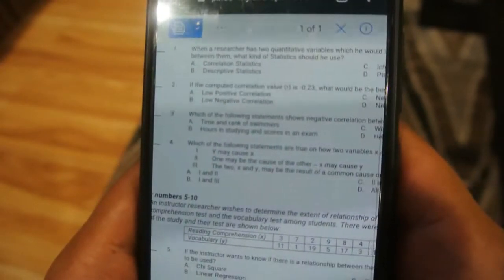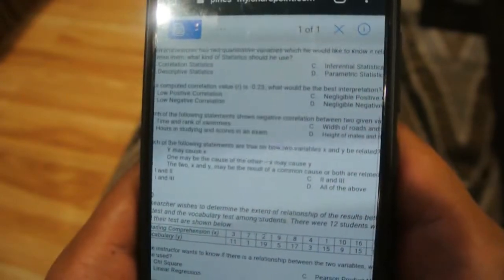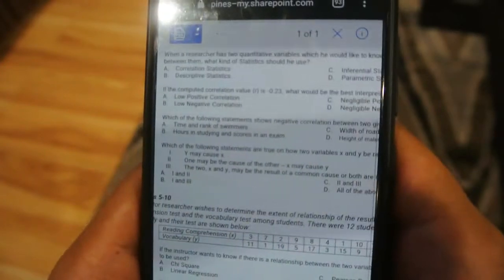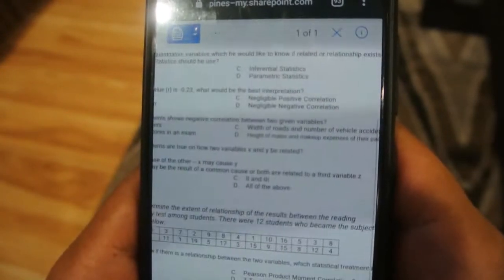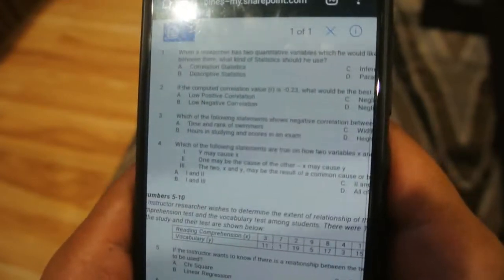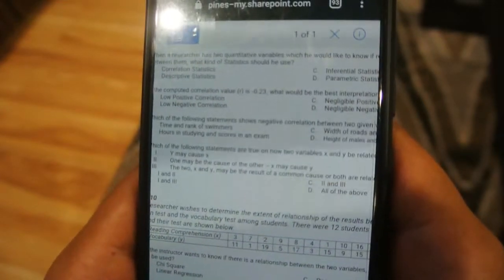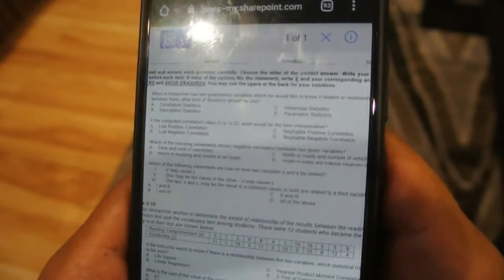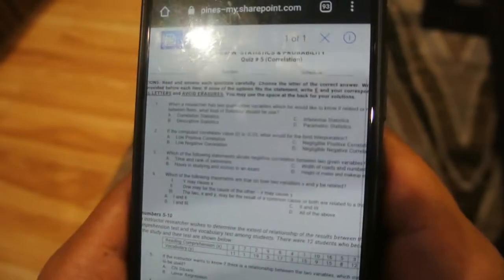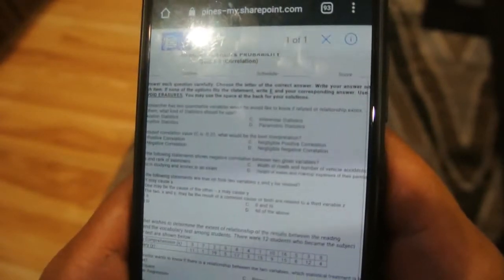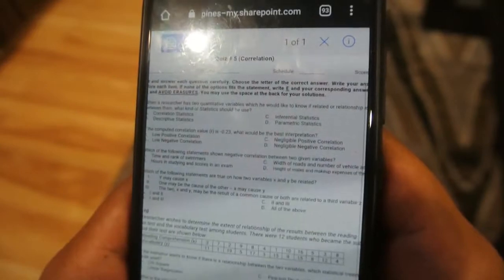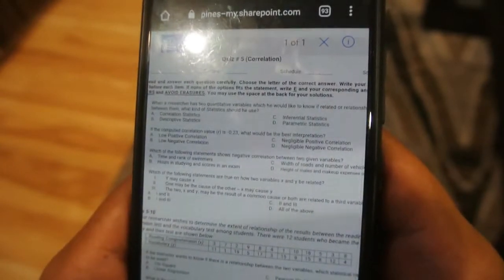Next, an instructor researcher wishes to determine the extended relationship or result between the reading comprehension test and the vocabulary test among students. There are 12 students who became the subject of the study and their tests are shown below. If the instructor wants to know if there's a relation between the two variables, which statement treatment is best to be used?